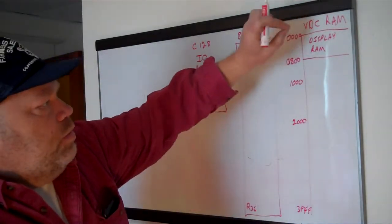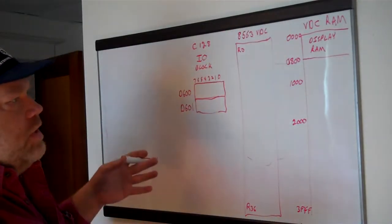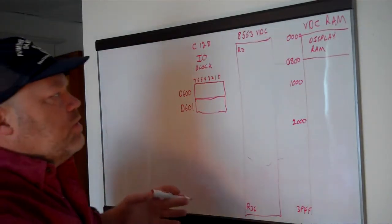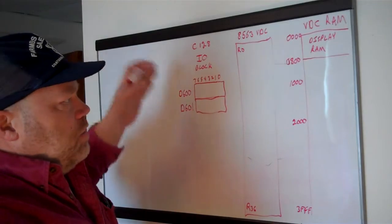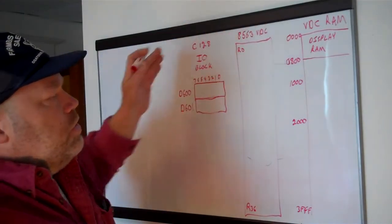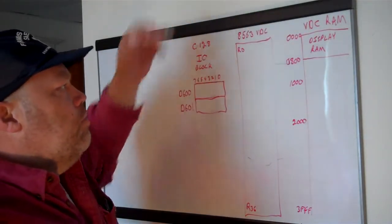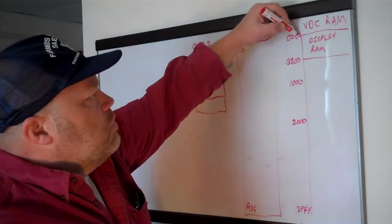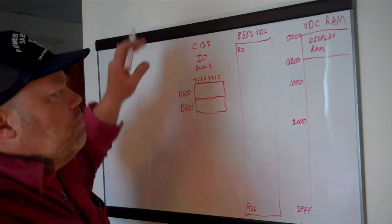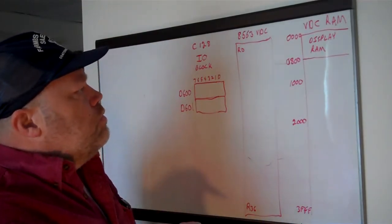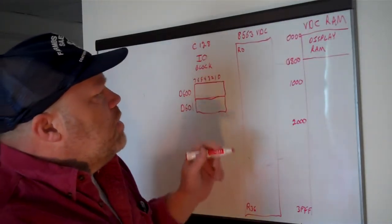When you plug character values in here they show up on the screen. There are 2,000 locations on the 80-column screen since it's twice as wide, and they correspond in order to locations on the screen, just like the 40-column screen works. If you plug a character value into the very first one at 0000, it shows up in the top left corner. The thing is, you can't plug it directly in there — you've got to go through this system that we'll be talking about.